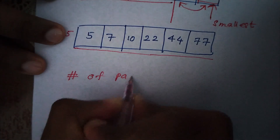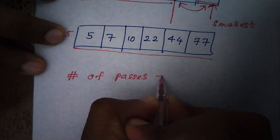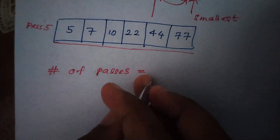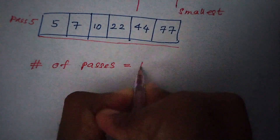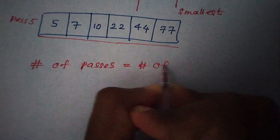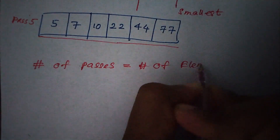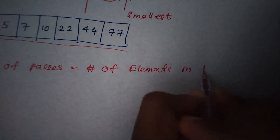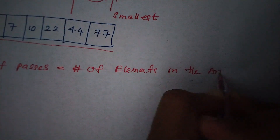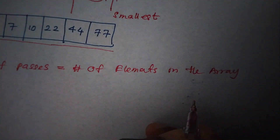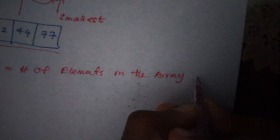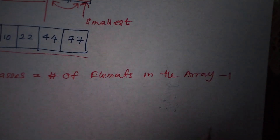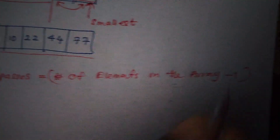Number of passes equals number of elements in the array minus one. If there are seven elements, the number of passes should be six. If there are ten elements, the number of passes should be nine — meaning we swap until nine times. So here, six minus one equals five, so there are five passes.